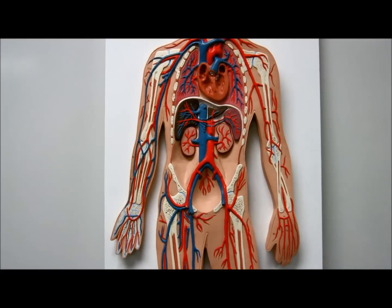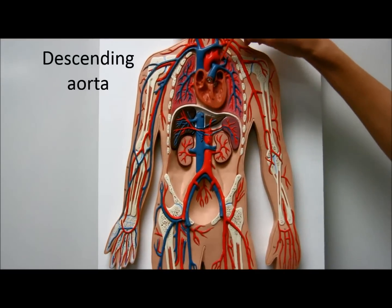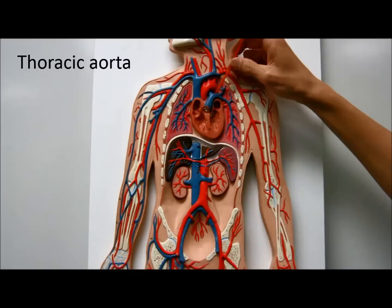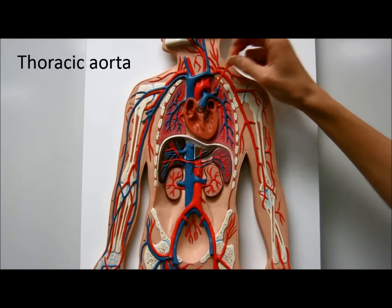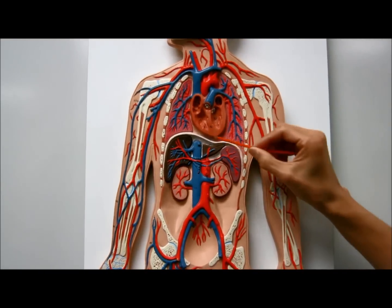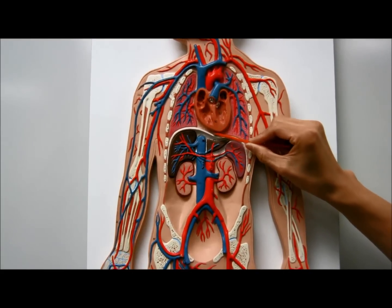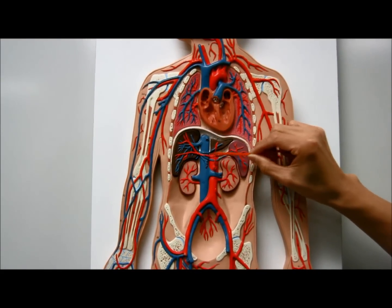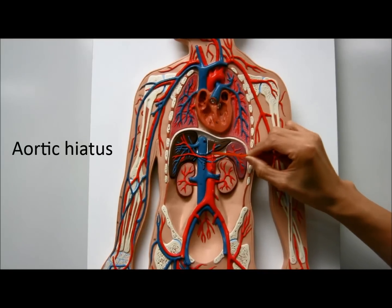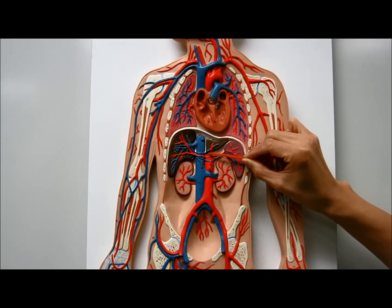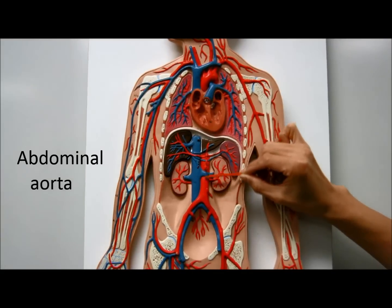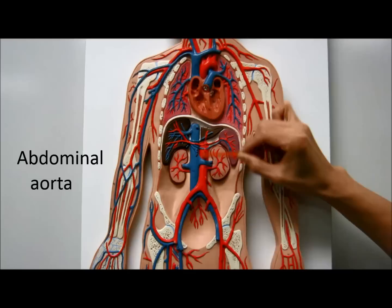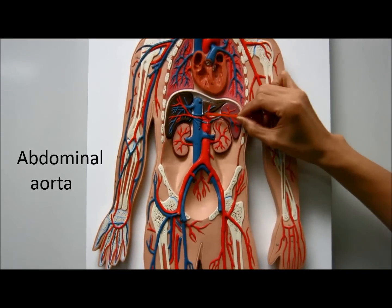The brachial artery also branches to form the radial artery. The descending aorta becomes the thoracic aorta, which runs posteriorly behind the heart. The thoracic aorta then crosses the diaphragm through an opening called the aortic hiatus, and becomes the abdominal aorta once it passes into the abdominal region.